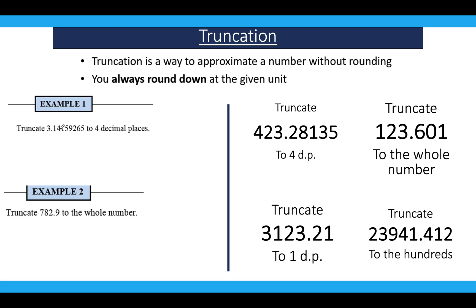So for example, if we have this number over here, truncate 3.14159265 to four decimal places. Truncation means that you literally just cut it off. So we get to the fourth decimal place and slice the rest of it off. So our answer would be 3.1415. We don't need to round any number, we would just need to cut it off.